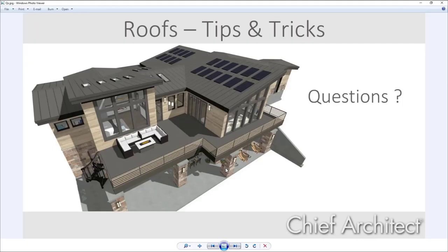Alan's question: when you have an existing roof and bring a gable transverse into it as a California join, when you build the framing it cuts true valleys instead of building the rafters on top of the existing roof. He manually goes into the framing and extends rafters, but when he rebuilds the framing for any reason, it cuts the rafters back to true valleys. He asks if there's a way to lock in those rafters so they're preserved when rebuilding.